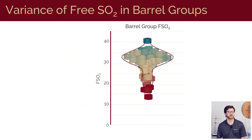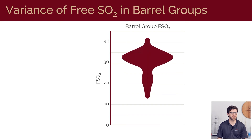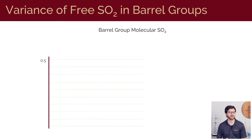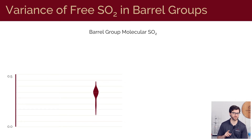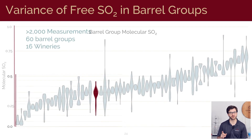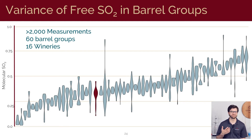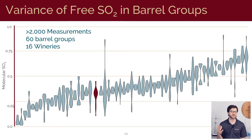The width of this distribution is going to correspond to the number of barrels within this group that have the corresponding concentration of free SO2. It's also more useful to convert these measurements into molecular sulfur dioxide, which takes into account the differences in pH for all of these different batches of wine. If we take the molecular SO2 distribution of the example barrel group and compare it to other groups across several different wineries, we can see that the variation in SO2 in this group is actually fairly typical.